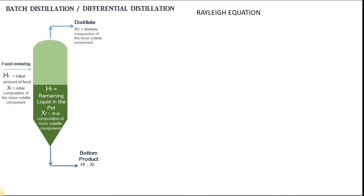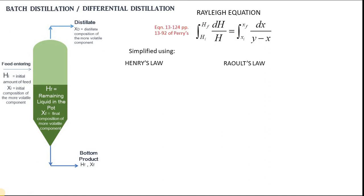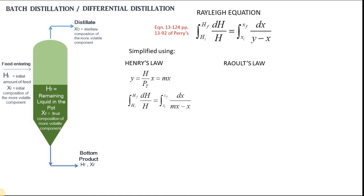Our working equation for batch distillation is the Rayleigh equation. The Rayleigh equation can be simplified by Henry's law and Raoult's law. In Henry's law, Y is equal to H over total pressure times X, where H over PT is equal to M. Substituting into the Rayleigh equation, we have the simplified form.